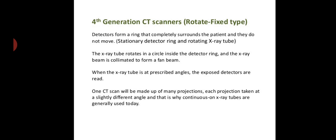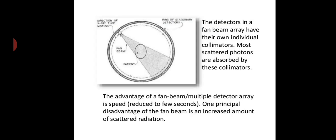The basic difference between the third generation and the fourth generation CT scan is that in third generation scanners, only rotate-rotate motion was used. That means the detectors and the tube both are moving. But in fourth generation CT scanners, only the x-ray tube is moving and the detectors form a ring and they are stationary. The detector in a fan beam array have their individual collimators. Most scattered photons are absorbed by these collimators. The advantage of the fan beam multiple detector array is speed reduced to few seconds. One principal disadvantage of the fan beam is the increased amount of scattered radiation. This is the fourth generation in which the detectors form a ring around the patient and only the x-ray tube is moving.